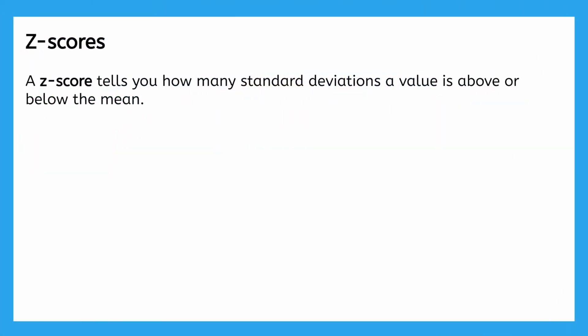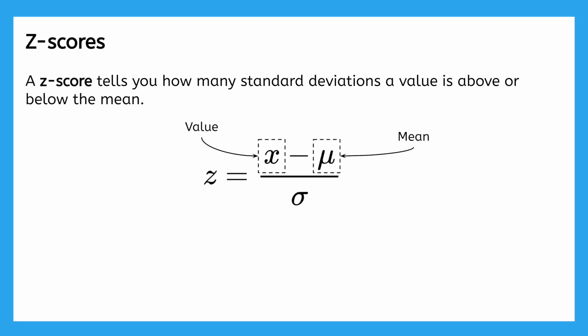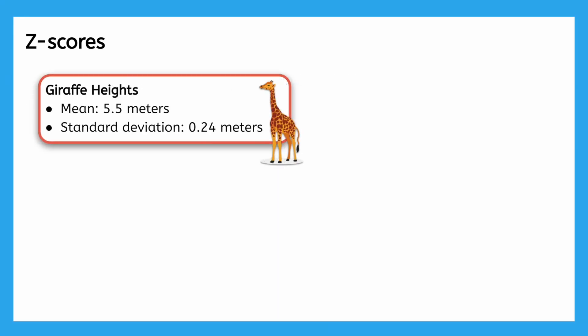Instead of just looking at the numbers themselves, z-scores show how unusual or exceptional a value is compared to the other values in a dataset. A z-score tells you how many standard deviations a value is above or below the mean. Calculating a z-score is just what it sounds like: first, we see how far a value is from the mean by subtracting the mean from the value, then we divide by the standard deviation to find the z-score. For example, the heights of adult giraffes are approximately normally distributed with a mean of 5.5 meters and a standard deviation of 0.24 meters.